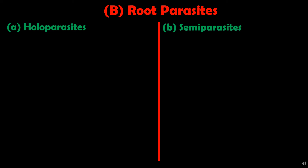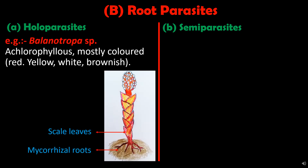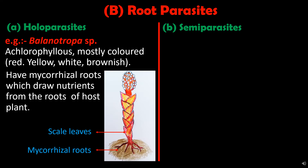The other type of plant parasites are root parasites. Like stem parasites, they are also categorized as holoparasites and semi-parasites. Holoparasitic root plants are totally dependent for their nutritional requirement on the roots of the host plant. Example is Balanophora. These plants are achlorophyllous and mostly colored. They have mycorrhizal roots which draw nutrients from the roots of the host plant, working in the same manner as described in the saprophytic section.